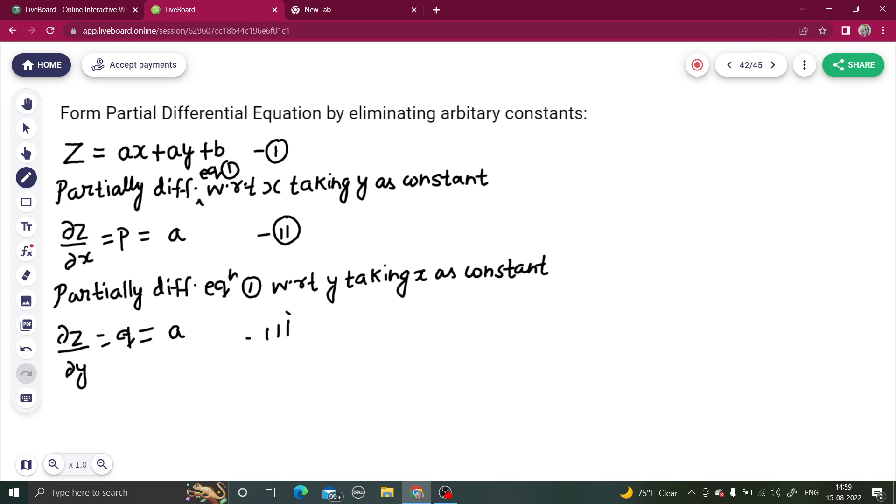This becomes equation number three. Now we have got everything in terms of a. So how will we eliminate the value of b? Sometimes we don't need to go back to equation number one. Sometimes it happens that from equation number two and three only, you are able to get a very good differential equation.